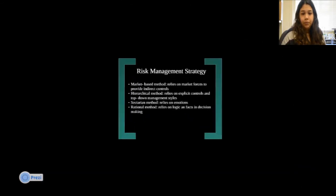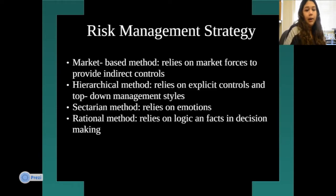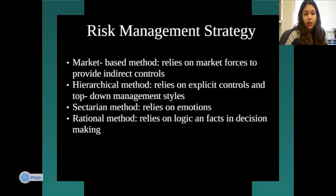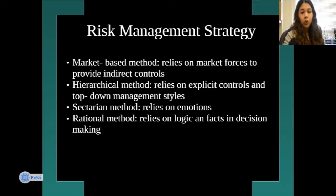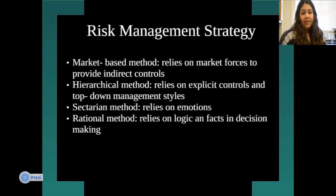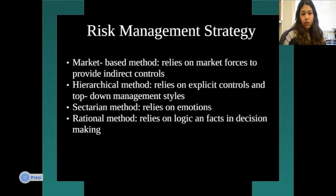The next part is the risk management strategy. There's a market-based method, which relies on market forces to provide indirect controls. There's a hierarchical method, which relies on explicit controls and a top-down management style. There's also a sectarian method, which relies on emotions, and a rational method, which relies on logic and facts in decision-making.